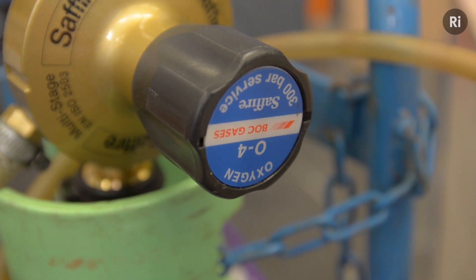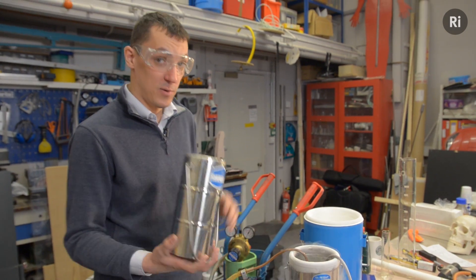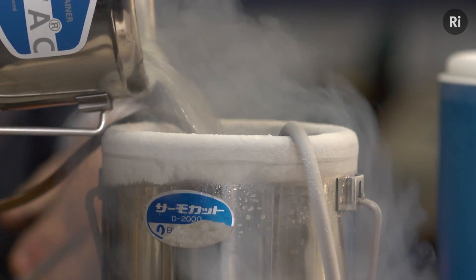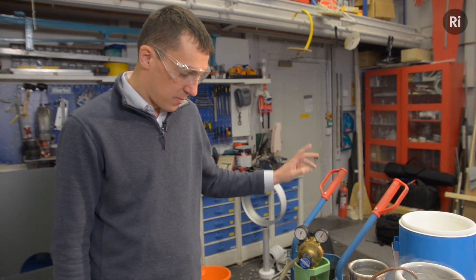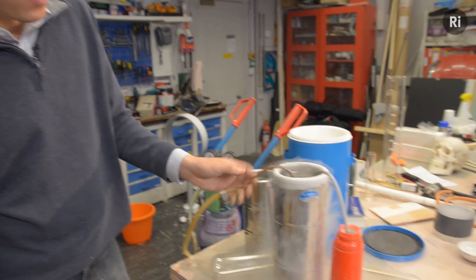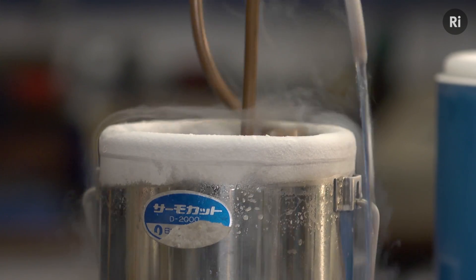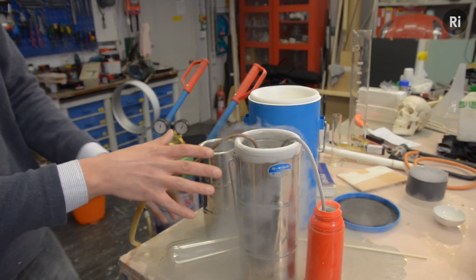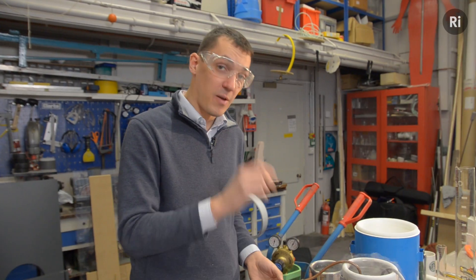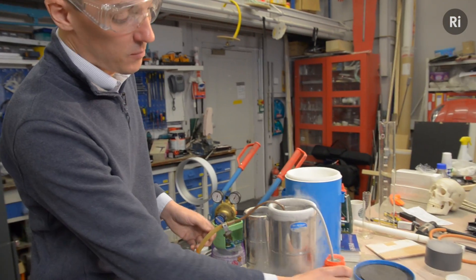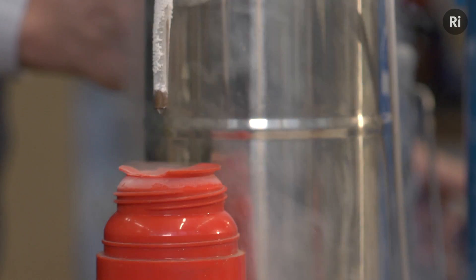Making liquid oxygen is pretty straightforward if you happen to have some liquid nitrogen, which I do. So what I've got here is my cylinder of oxygen, and I'm passing the oxygen through this copper coil here, which is immersed in liquid nitrogen. The oxygen has a higher boiling point than the nitrogen, so it condenses in the coil, and by the time it comes out the other end of the tube, it's a liquid.